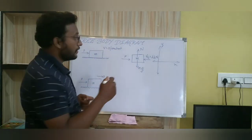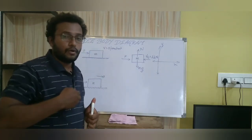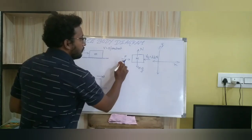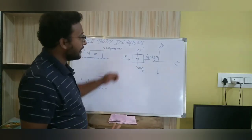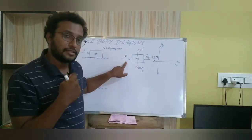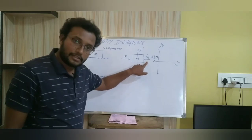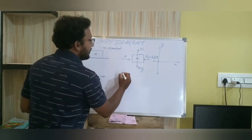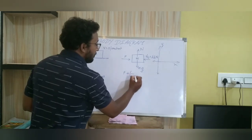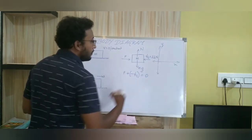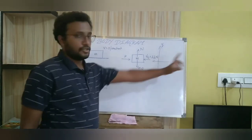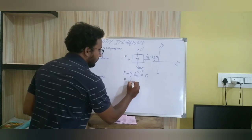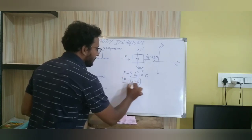To write the dynamic equations, we go axis by axis. Along the X axis, any force directed along the positive X axis is taken as positive and any force along the negative X axis is taken as negative. Therefore, the net force along the X axis is F minus Fs, and that must equal zero, because there is no acceleration along the X axis. So F minus Fs equals zero. This is the dynamic equation along the X axis.